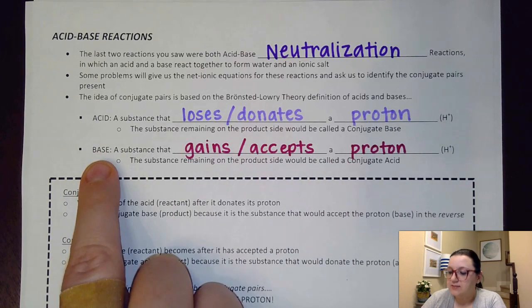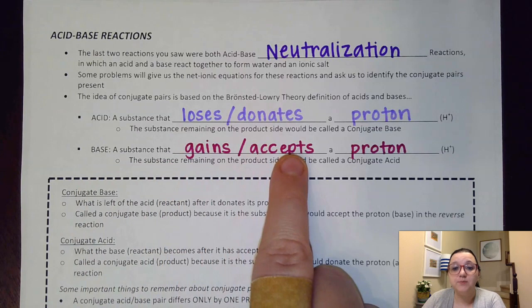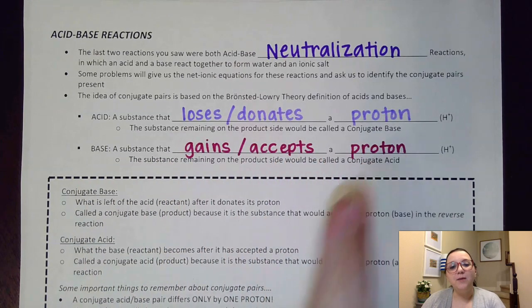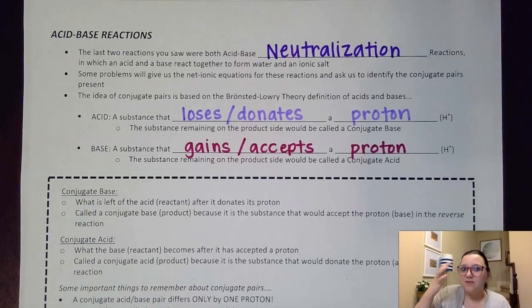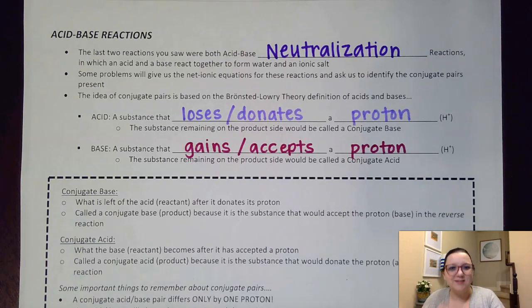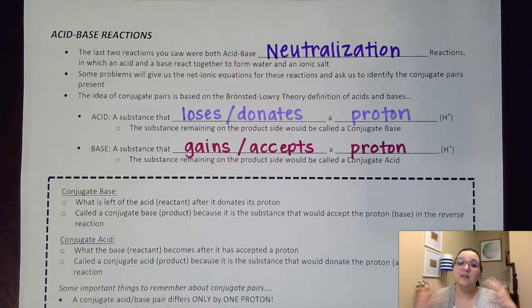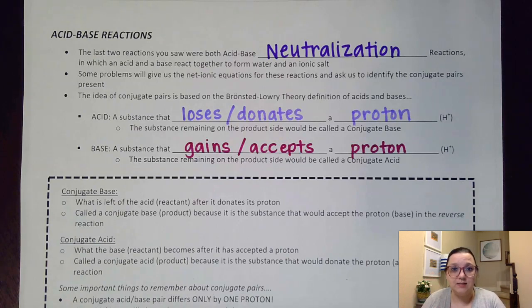A base is defined as a substance that gains or accepts a proton. You're going to have to have one substance that loses the proton — so you need an acid — and another substance that gains that proton — so it's kind of like you can't have an acid without having a base and vice versa. They have to be working in conjunction with each other. The acid and the base are always identified as our reactant substances, but the product side produces what are called our conjugate pairs.